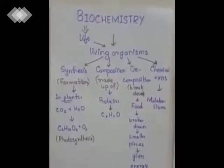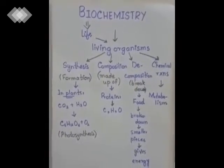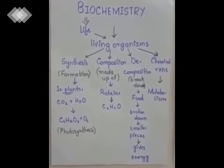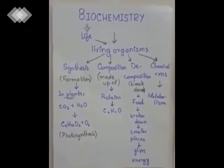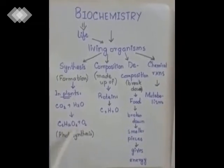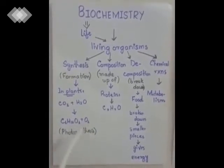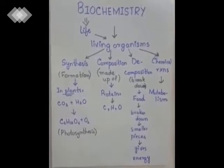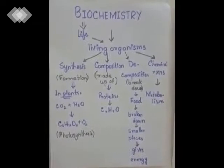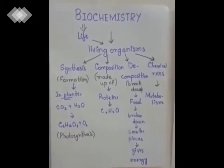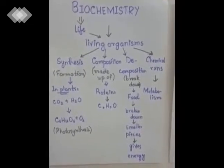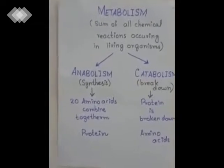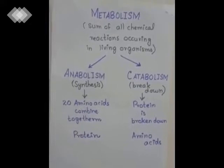The seventh branch, biochemistry, is the study of living organisms covering synthesis, composition, decomposition, and chemical reactions. In synthesis, glucose is formed during photosynthesis. In composition, protein is made up of carbon, hydrogen, and oxygen. In decomposition, food is broken down into smaller pieces releasing energy. Chemical reactions in living organisms are called metabolism, which has two types: anabolism — synthesis of compounds — and catabolism — breakdown of compounds.